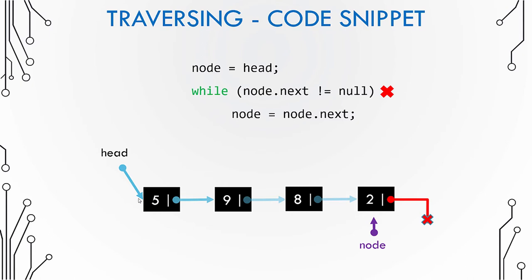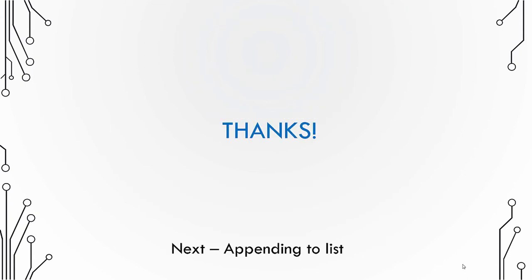Inside the while loop you can add your own logic to check the value of each node you are traversing. You can always stop arbitrarily at any point — you don't need to go to the last node every time. That was all about traversing a linked list. Next we will see how to append a node.